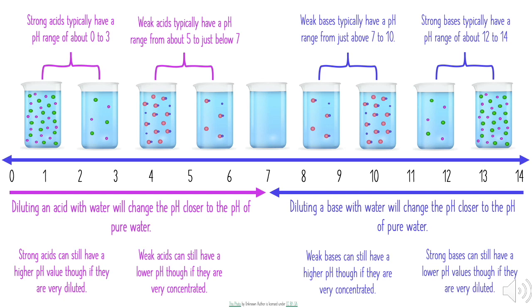Now let's look at the relationship between acid and base strength, concentration, and pH values. On the pH scale shown, the neutral beaker sits above a pH of 7, more acidic solutions are to the left, and more basic solutions to the right. Strong acids typically have a pH range of about 0 to 3. Weak acids typically range from about 5 to just below 7. Weak bases range from just above 7 to 10, and strong bases typically range from about 12 to 14.